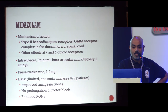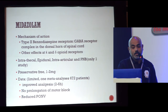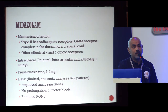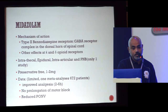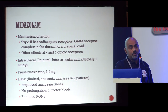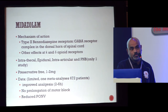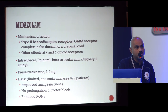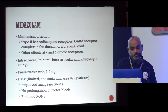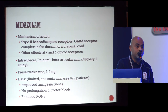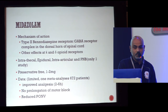Midazolam is a GABA agonist and also has effects on GABA and delta receptors. It has been used intrathecally, epidurally, intra-articularly, and in peripheral nerve blocks. Make sure you use preservative-free formulations in small doses. Although there is limited data, a meta-analysis of approximately 672 patients shows some improved analgesia, but no prolongation of motor block, and it is associated with reduced nausea frequency.